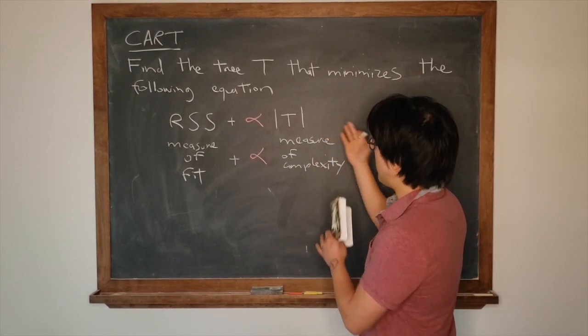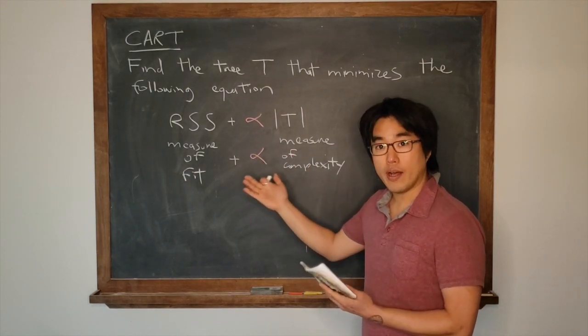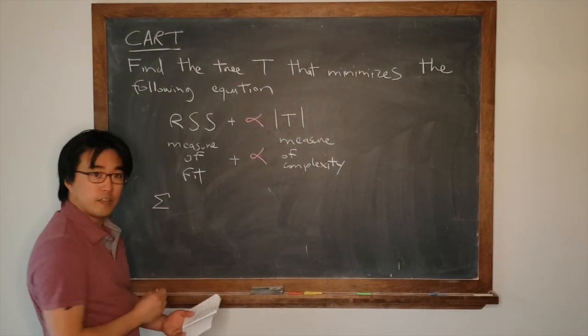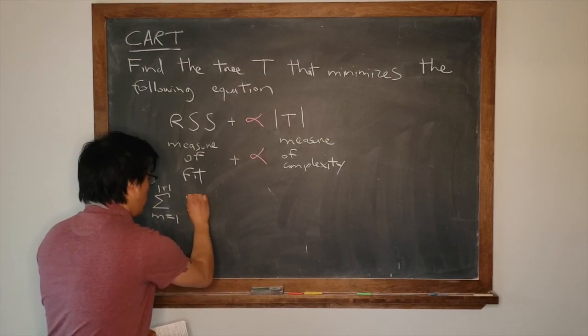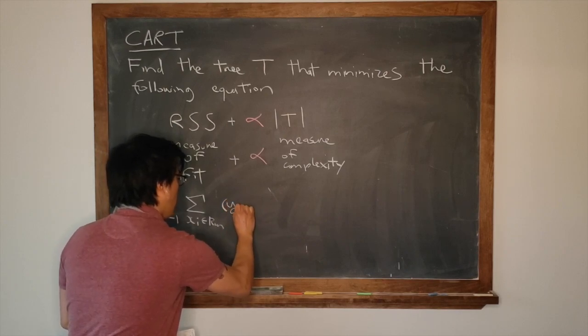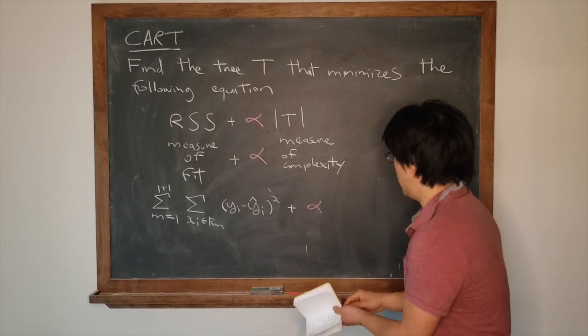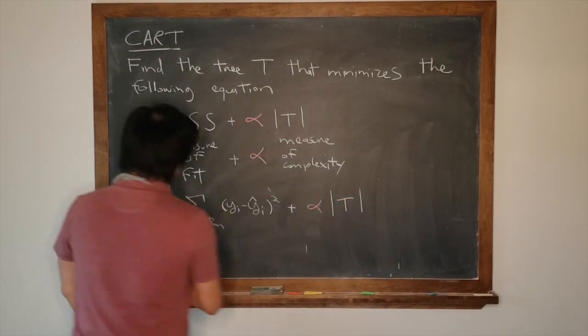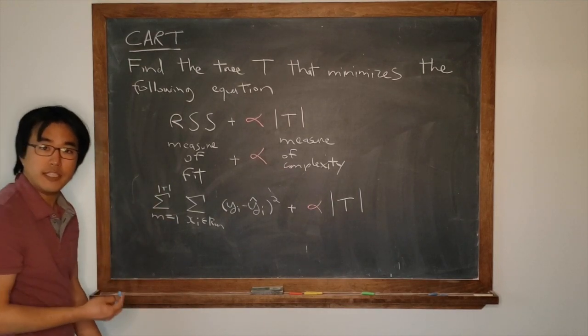Remember, cardinality of a tree is just a way of counting things. When we specify the cardinality of a tree, we're talking about the number of leaves. But what are all these components? The residual sum of squares is a measure of fit, plus alpha times a measure of complexity.